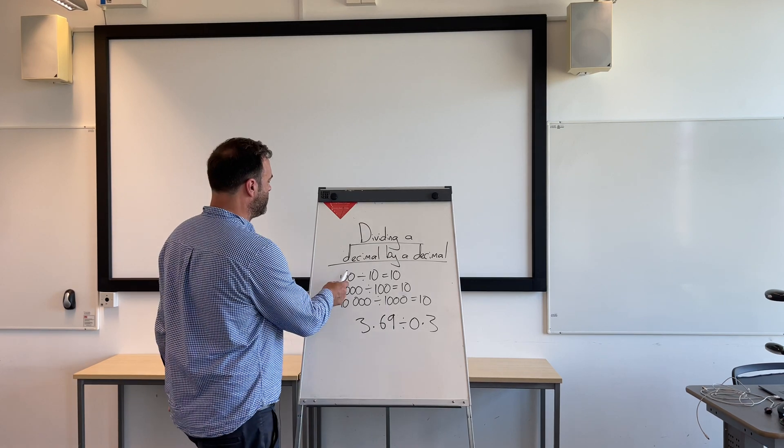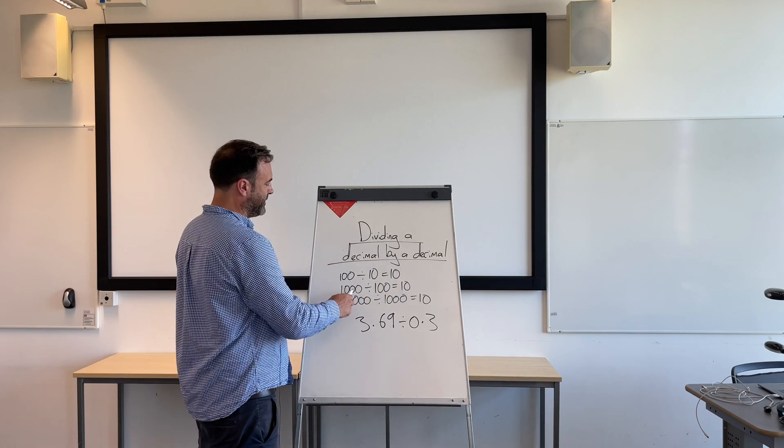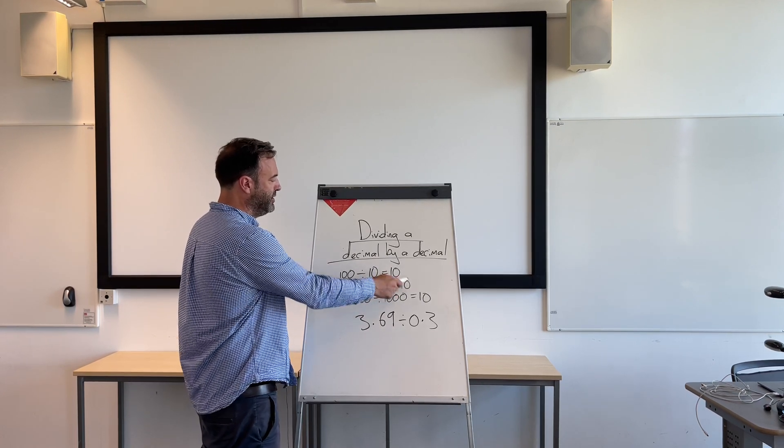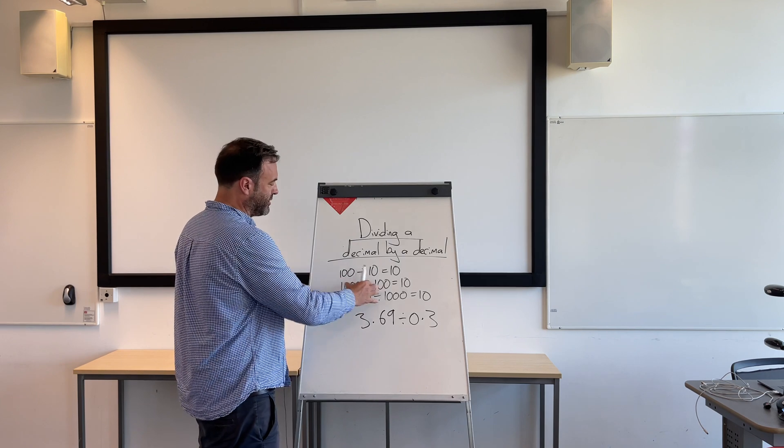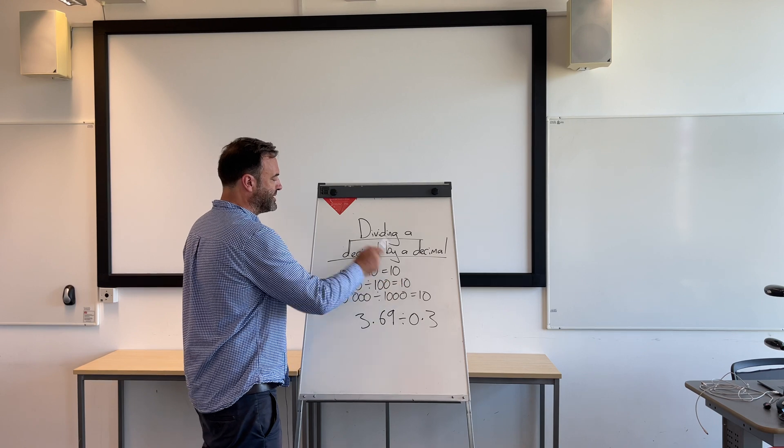If you divide 100 by 10, you get 10. If we factor that up, if you divide 1,000 by 100, you get 10 still. Factor it up both sides again. If you divide 10,000 by 1,000, you get 10.